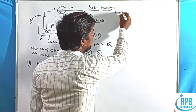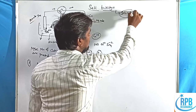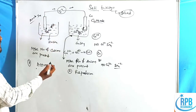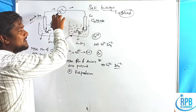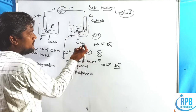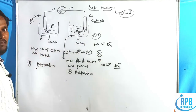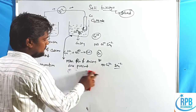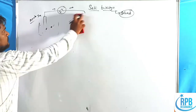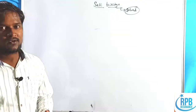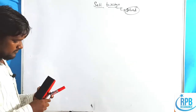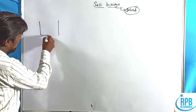Both of these problems — excess cations attracting electrons at the anode and excess anions repelling electrons at the cathode — are solved using the salt bridge. With the help of the salt bridge, these two problems are resolved. Let us now discuss the complete solution and the uses of the salt bridge in galvanic cells.